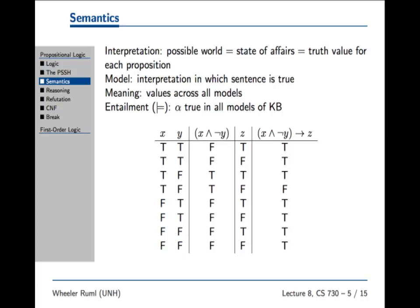In propositional logic, a possible world has a very particular meaning: it's a particular assignment of truth values to all the propositions. The propositions correspond to things I'm interested in knowing about — like 'is it raining outside?' or 'the bomb is about to explode in five seconds.' These are propositions. If we take all the propositions in our domain, each of those propositions could be true or false. That describes all the possible worlds. And when you write something down, you're asserting its truth and thereby limiting the number of possible worlds.